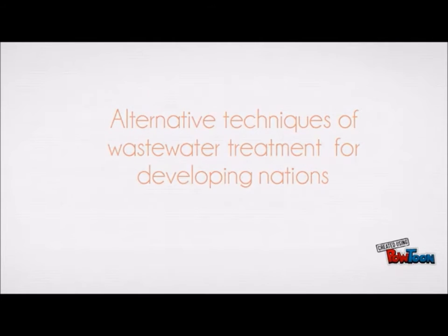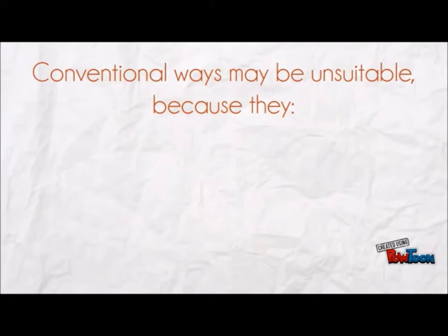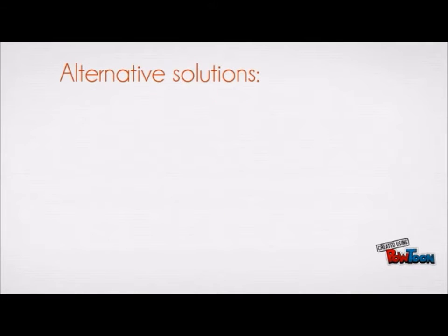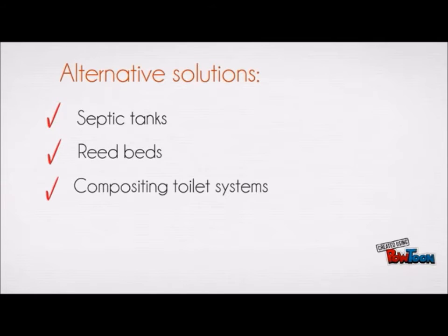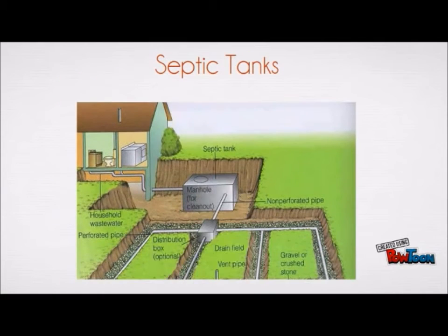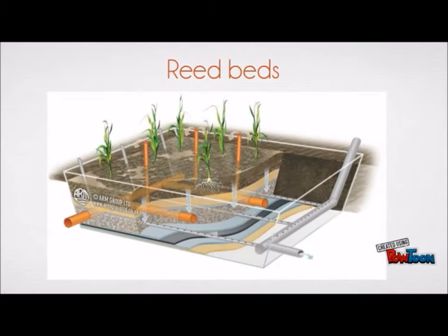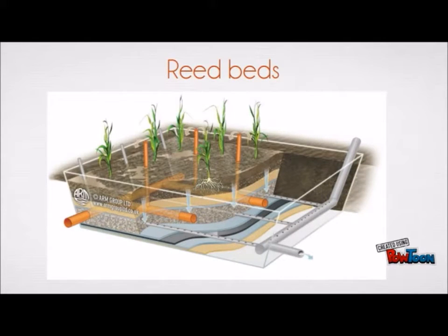Alternative techniques of wastewater treatment for developing nations. Conventional techniques could be unsuitable for developing countries because they require huge amounts of water and are very expensive. Alternative solutions include septic tanks, grid beds, composting toilet systems, and human waste bioreactors. Septic tanks involve primary wastewater treatment systems where there is separation of solids and physicochemical treatment. 40% of BOD is removed, and effluent can be reused to fertilize crops, and the solids can be disposed of at a sanitary landfill. Grid beds involve secondary treatment of wastewater and include reduction of ammonia, BOD, as well as suspended solids. This is usually applied after a septic tank, and there is usually a symbiotic relationship between bacteria and the root cells.